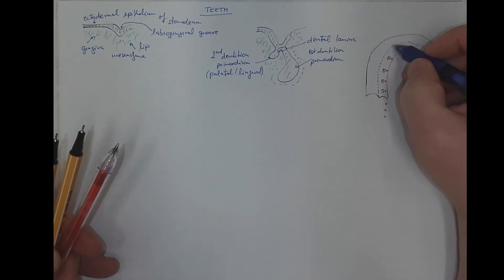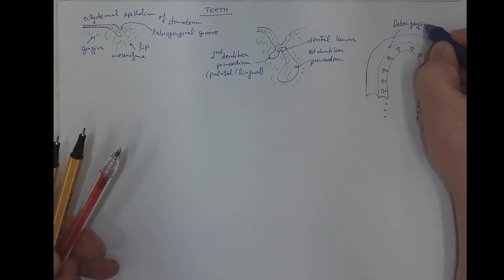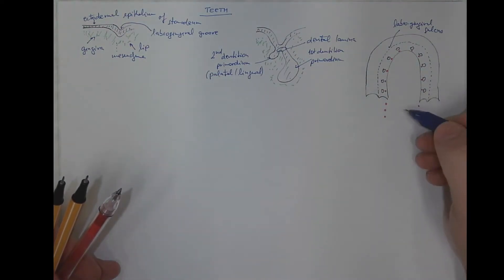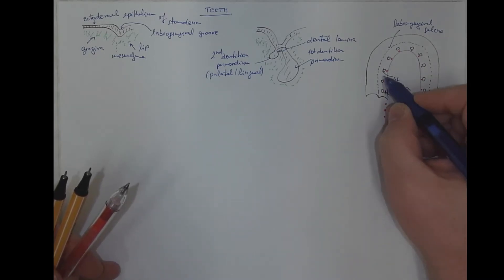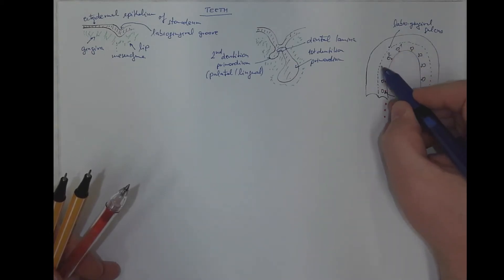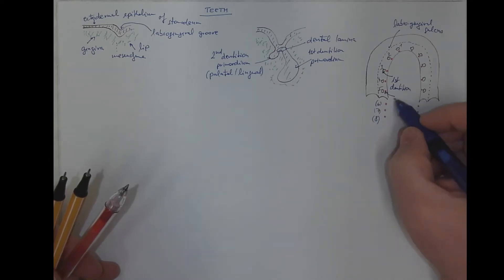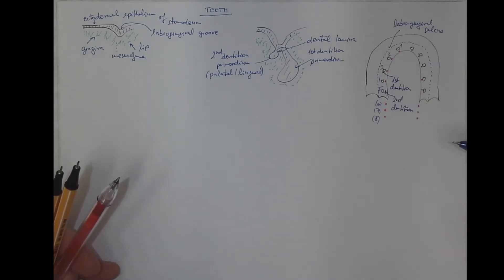This is the labio-gingival sulcus — the groove separating the gingiva from the lip. Here are the primordia for the first dentition: one through five. And for the second dentition: six, seven, eight. So this dental lamina has the potential to form the primordia of the teeth.